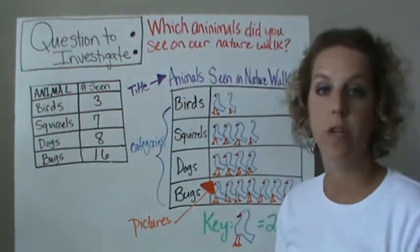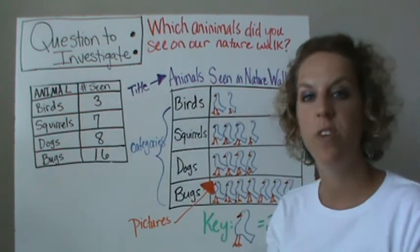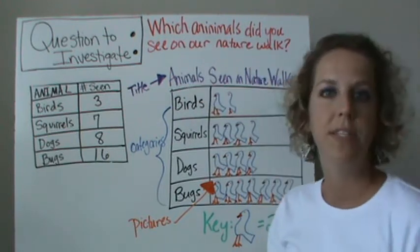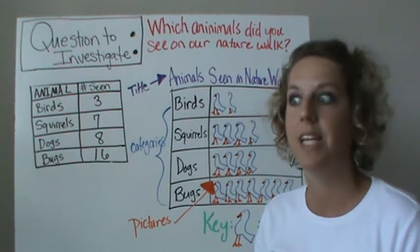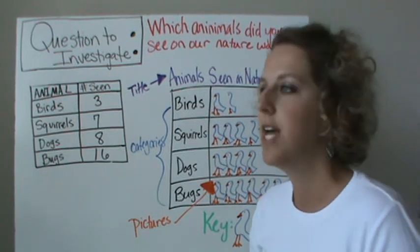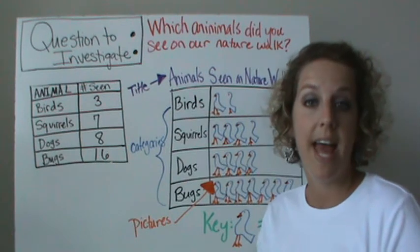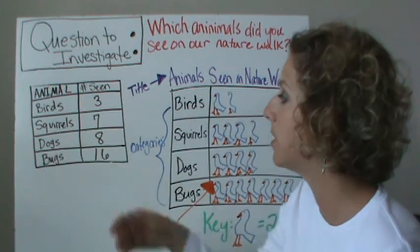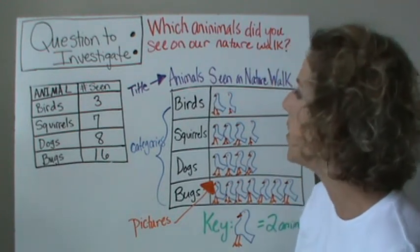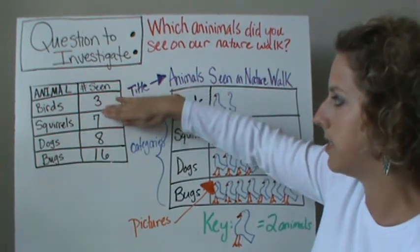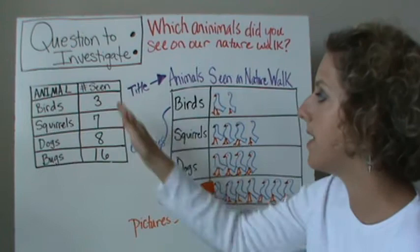For an example, I used those five steps to create an investigation. The question I chose was: which animals did you see on our nature walk? Let's pretend we went outside on a nature walk, and I gave you a list of animals to watch out for — birds, squirrels, dogs, and bugs. When we collected the data, we saw three birds, seven squirrels, eight dogs, and sixteen bugs.